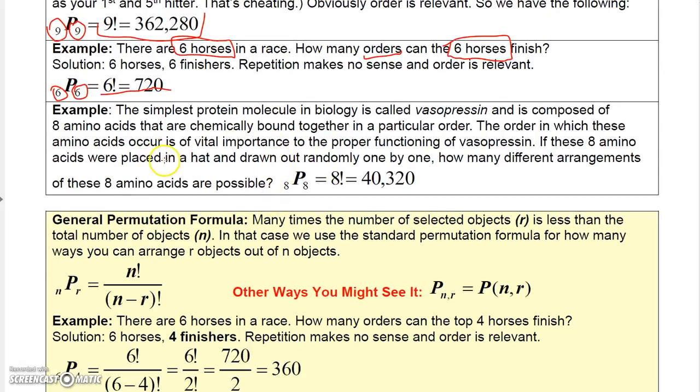And then, here's the amino acid example again. How many ways can you arrange eight amino acids out of eight amino acids? Well, you want the arrangement, so it's a permutation, and 8P8 is 8 factorial.